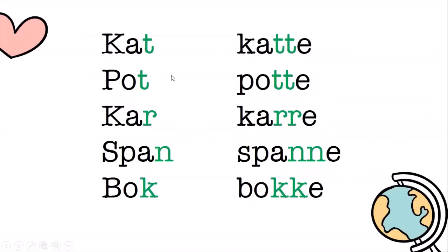Kom ons kyk na nog 'n paar. Kat, pot, kar, span, bok - all of these have short vowels. We double the consonant next to the short vowel and add E. Kat word katte - double T. Pot word potte - double T. Kar word karre - double R. Span word spanne. Bok word bokke - double K.